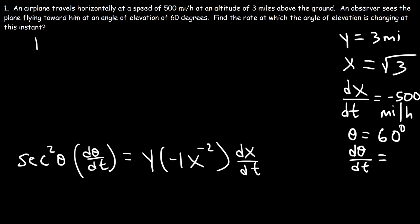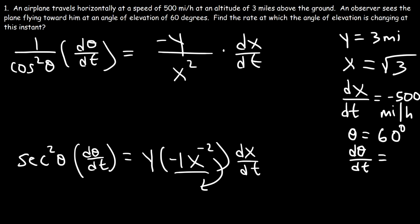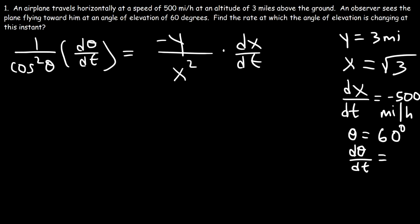Now secant is 1 divided by cosine. So secant squared is 1 over cosine squared. And here we have negative y. I'm going to move the x to the bottom. So it's going to go from x to the negative 2 and change to x to the positive 2. And then times dx over dt. So theta is 60. Therefore, this is going to be cosine of 60 degrees. But let's not forget to square it.